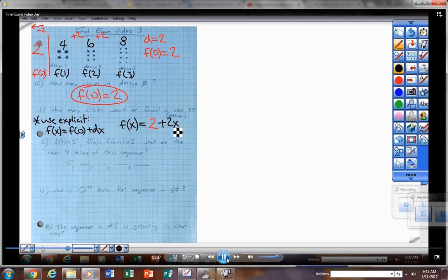And we'll usually write that in slope-intercept form with the 2x first and the 2 second. So I would get in the habit of writing it in slope-intercept form. And then I'm going to use that explicit function to evaluate it for 25. I'm going to plug in 25 for x and do the math.